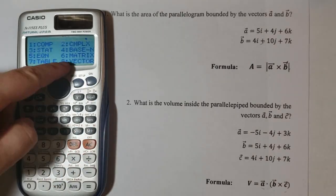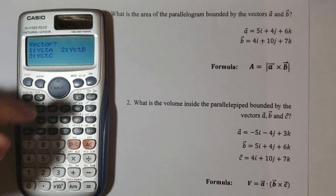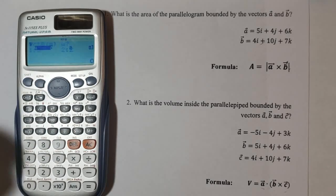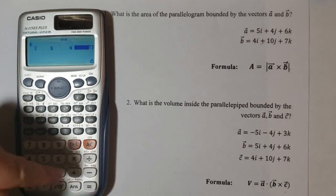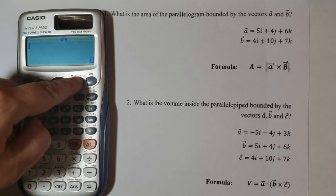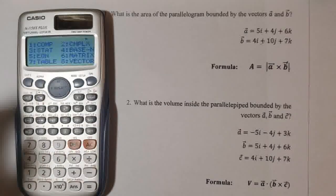Then go to mode 8 for vector 2 for vector b. 1 for the 3 directions. Now we have 5 equal, 4 equal, 6 equal, AC.